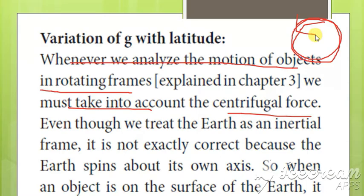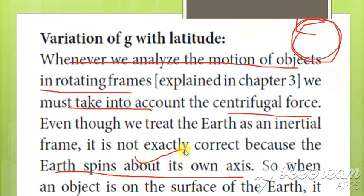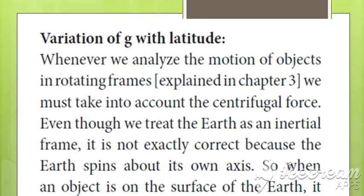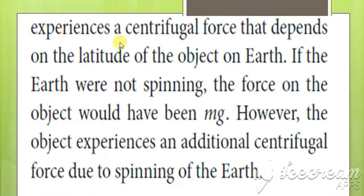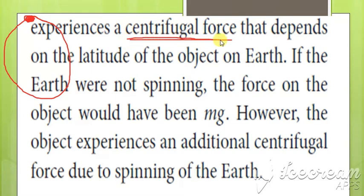Other than the inertial frame, the earth is not exactly stationary because the earth spins about its own axis. Earth is also rotating — it is spinning, so it is not in an inertial frame. When an object is on the surface of the earth, it experiences a centrifugal force. That centrifugal force depends on the latitude of the object on the earth.